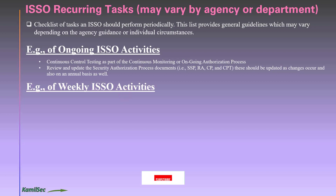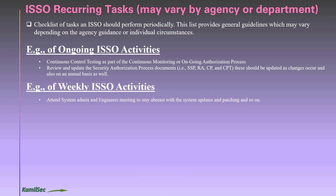For weekly ISSO activities: attend system administrator and engineer meetings to stay abreast of system updates, patching, upgrades, server provisioning, and decommissioning. These activities feed into how you update your SSP. Make it a point to attend these meetings in a listening mode — just be present, ask questions, and stay aware of what the team is doing.